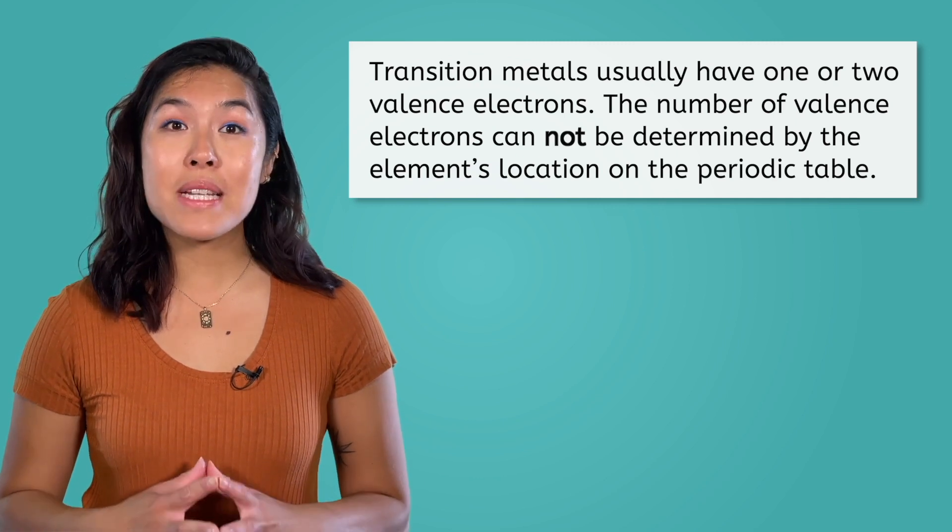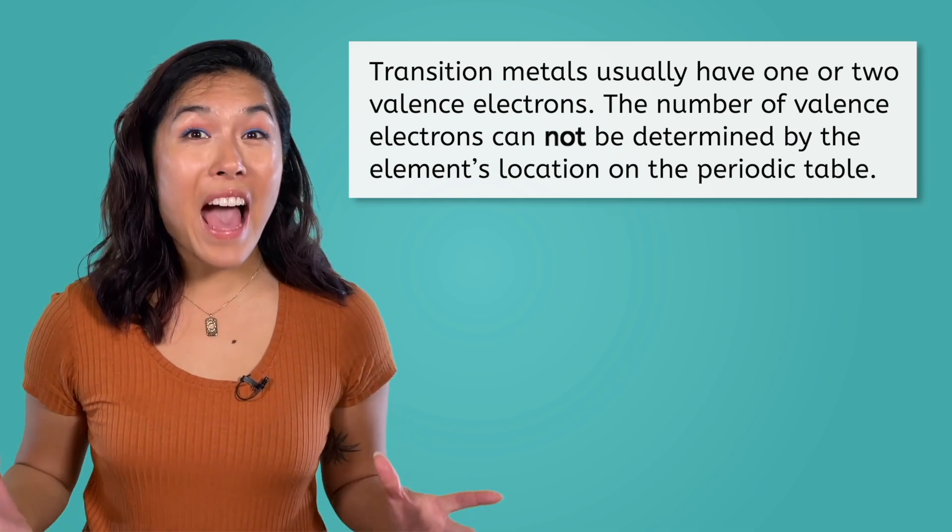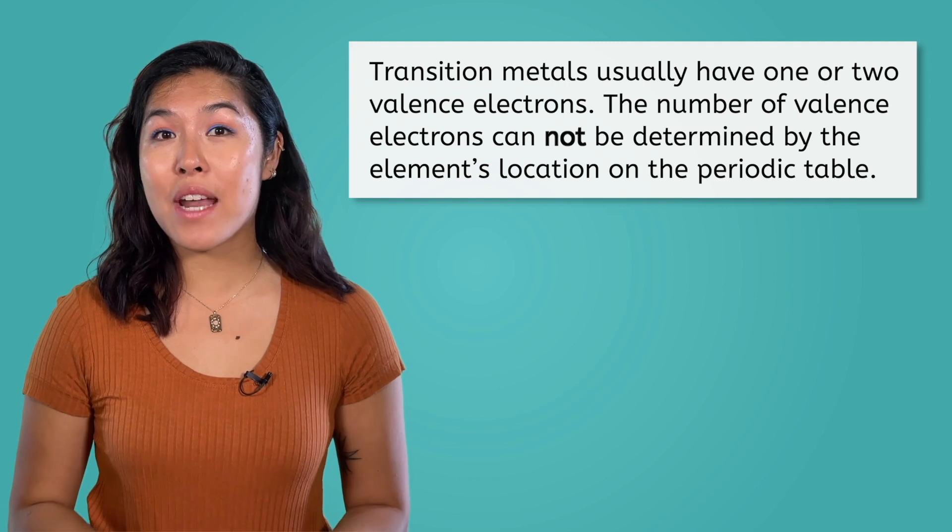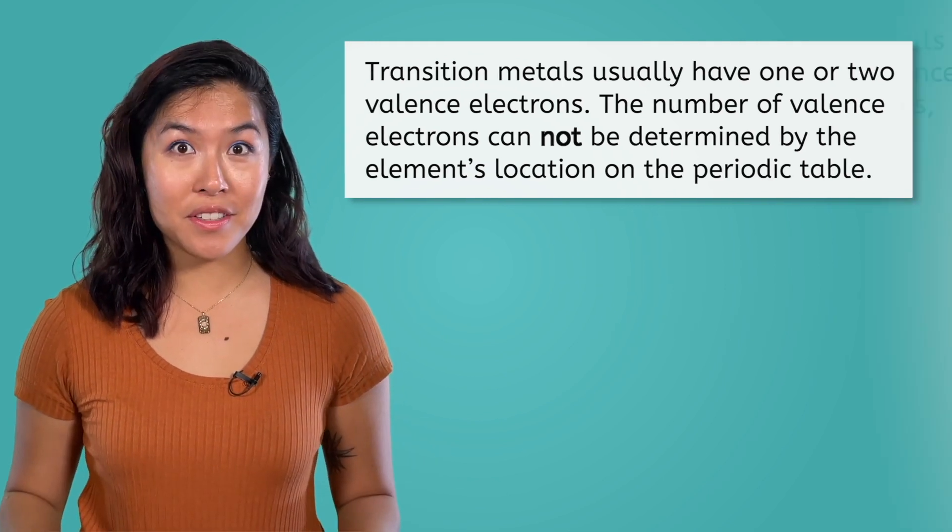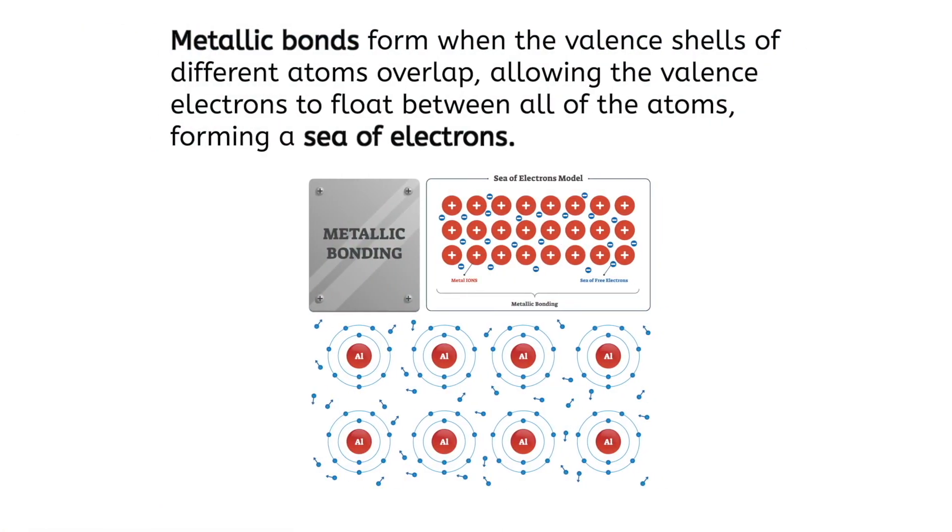However, when forming metallic bonds, the number of actual valence electrons an atom has does not matter. In metals, the valence shells of the different atoms overlap, and the electrons are free to move around all of the different nuclei at high speeds. The electrons are said to form a sea of delocalized electrons.